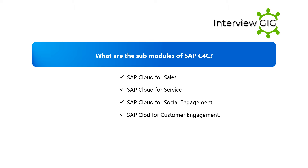What are the sub-modules of SAP C4C? The sub-modules are: SAP Cloud for Sales, SAP Cloud for Service, SAP Cloud for Social Engagement, and SAP Cloud for Customer Engagement.